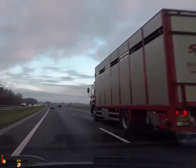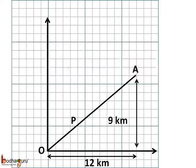Godown is 12 km East and 9 km North. Let us mark this as point A. We are measuring the distance from the factory. So factory is at origin.